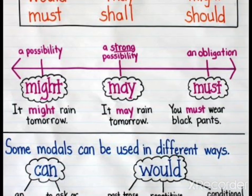Modal auxiliary verbs include: can, could, will, would, may, might, must, shall, and should. 'Might' is used for possibility. 'May' is used for strong possibility. 'Must' is used for obligation. For example: 'You must wear black pants' and 'You must visit the mall' — these express obligation.